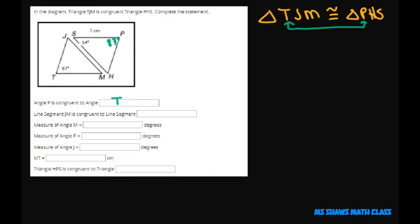Line segment JM. So let's look at this again. JM is right here. It has to be congruent to line segment HS because it has to go in order. So you just look at this and you can see JM is congruent to HS. These two line segments are congruent.